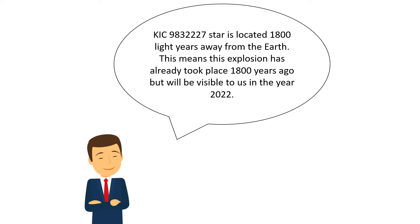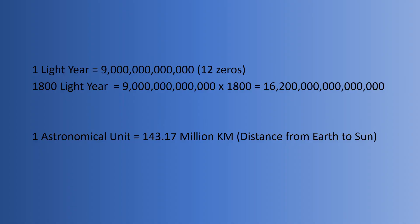One light year is the distance which light takes to cover in an Earth year. And since one light year is 9 trillion kilometers, 1800 light years is 16,200 trillion kilometers away from the Earth.